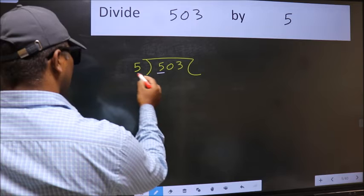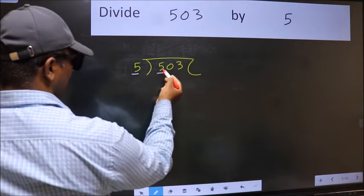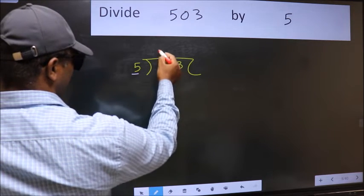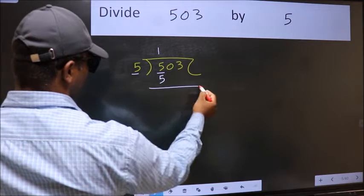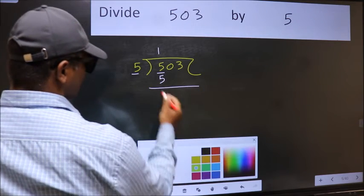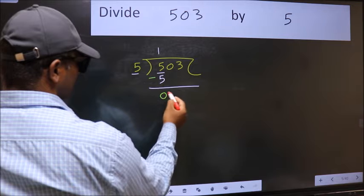Here we have 5. Here also 5. When do we get 5 in 5 table? 5 once, 5. Now we should subtract. 5 minus 5, 0.